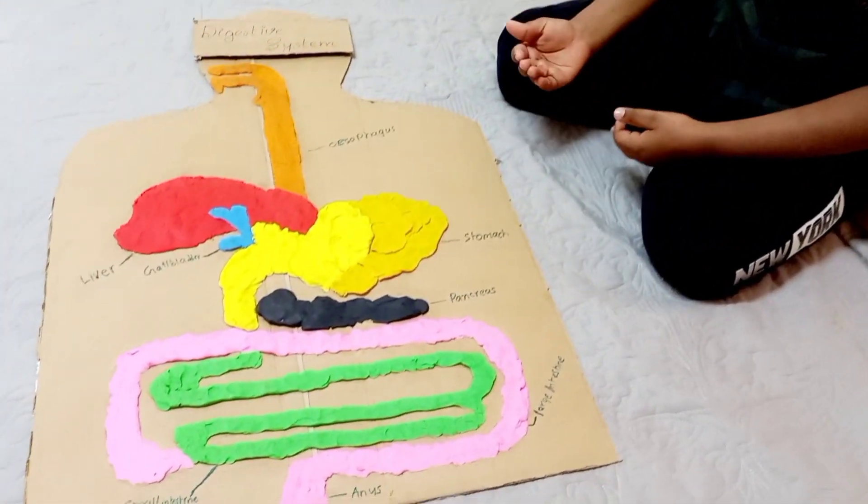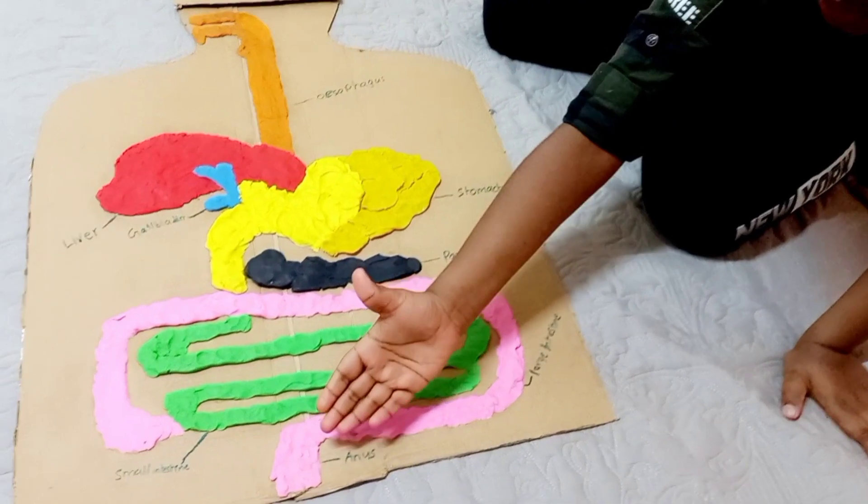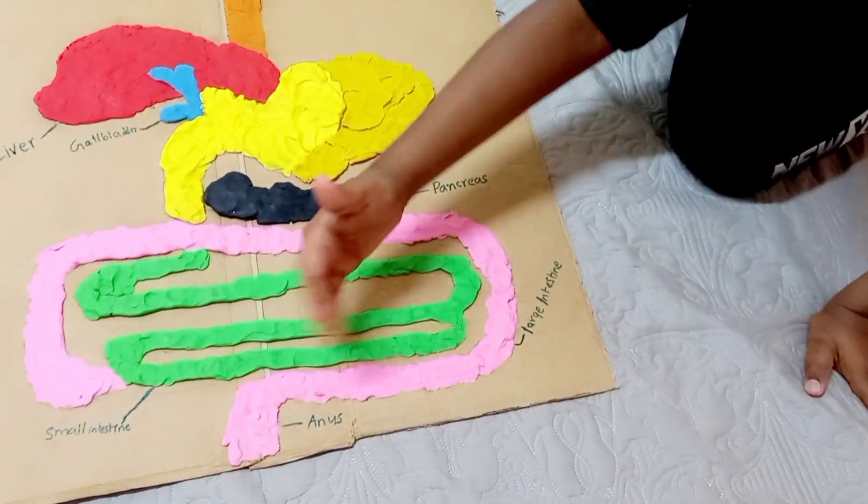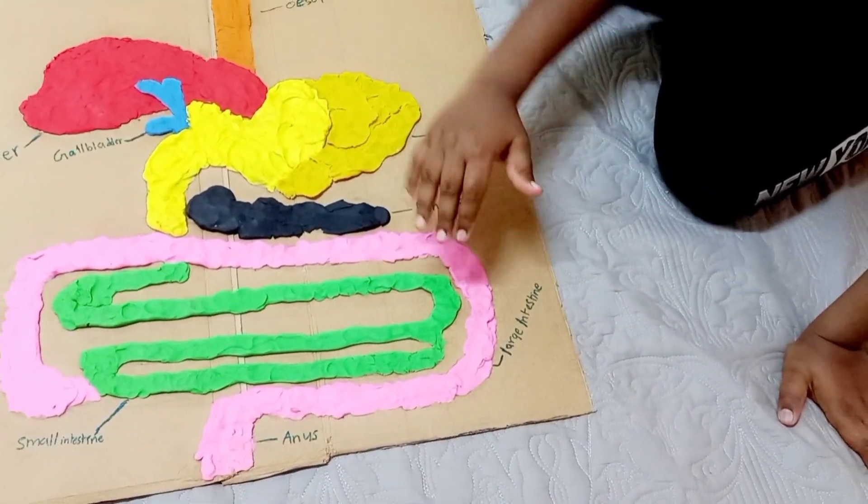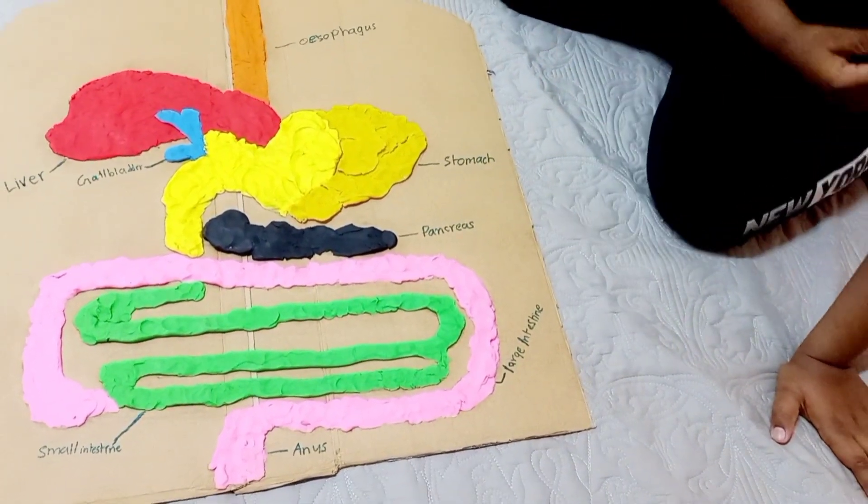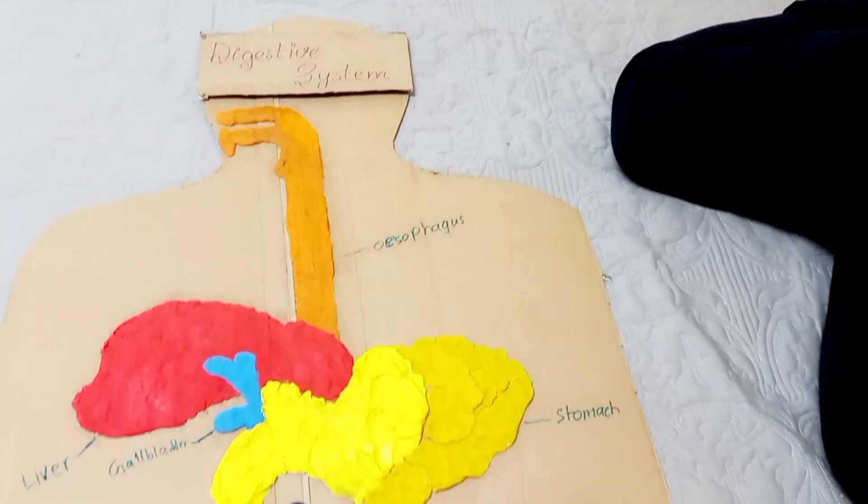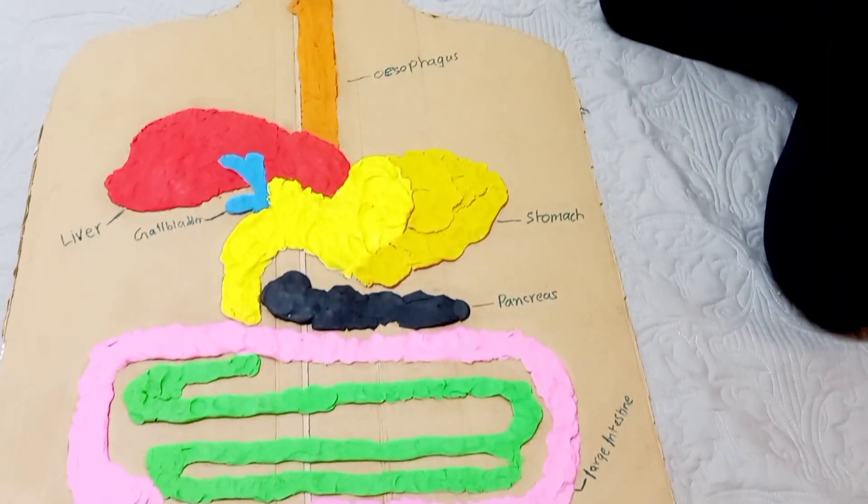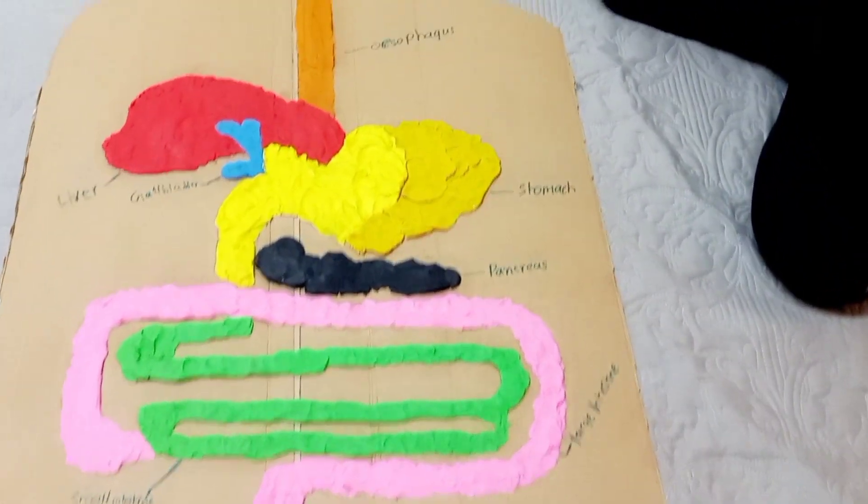Your body uses nutrients for energy, growth, and cell repair. Each part of your digestive system helps to move food and liquid through your GI tract, break food and liquid into smaller parts, or both.